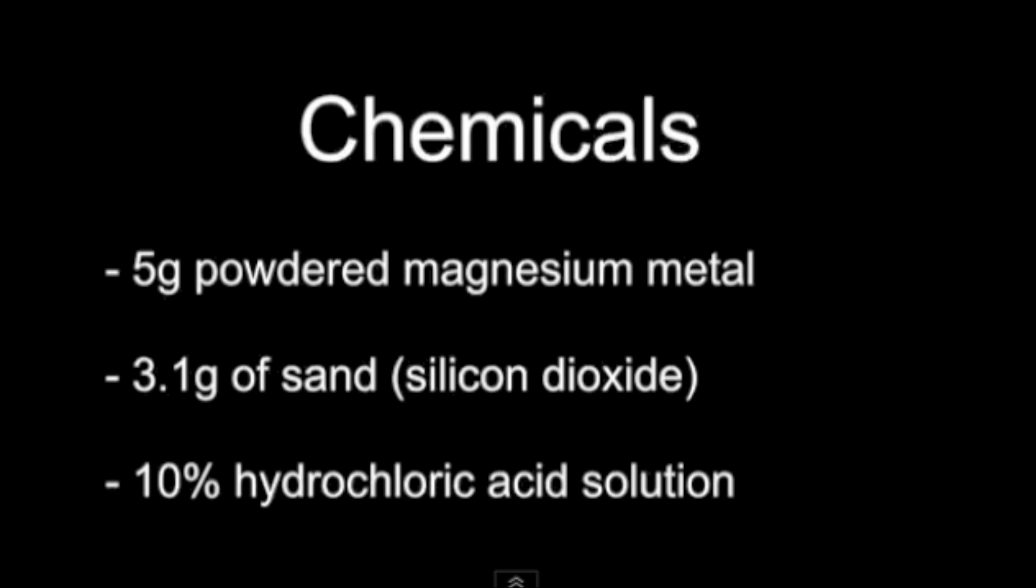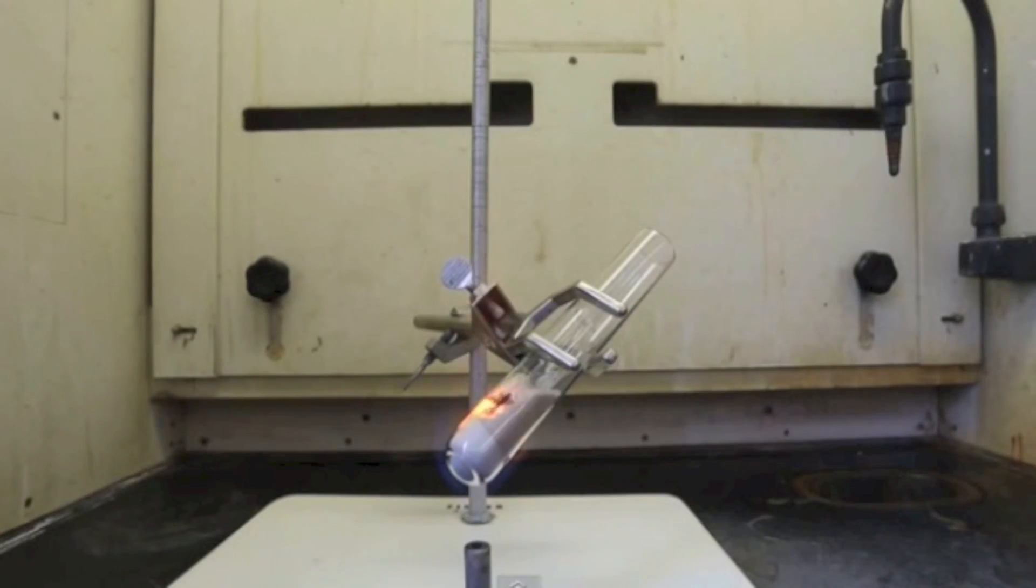The silicon then reacts with the excess hot magnesium to make magnesium silicide. In his procedure, an excess of magnesium was used to ensure that all of the silicon got converted to magnesium silicide.